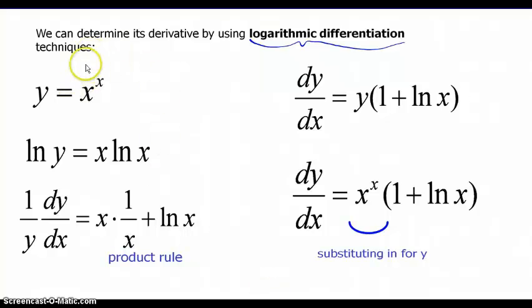Let's talk about how we're going to find the derivative of this unnamed function, a function that has a variable for a base and a variable for an exponent. It is not an exponential function, it is not a power function, so we're going to have to use a different technique to find its derivative.